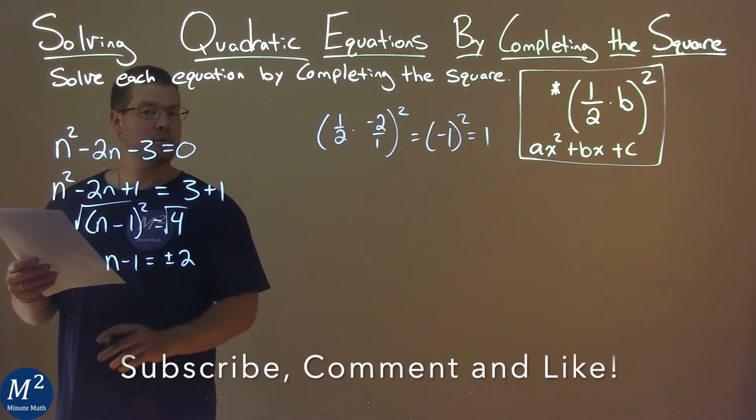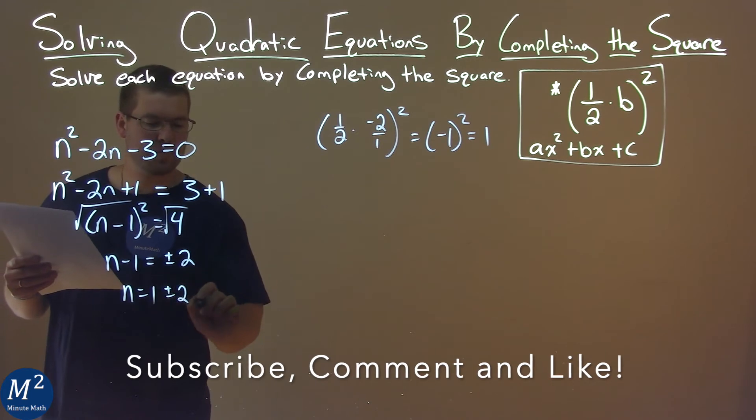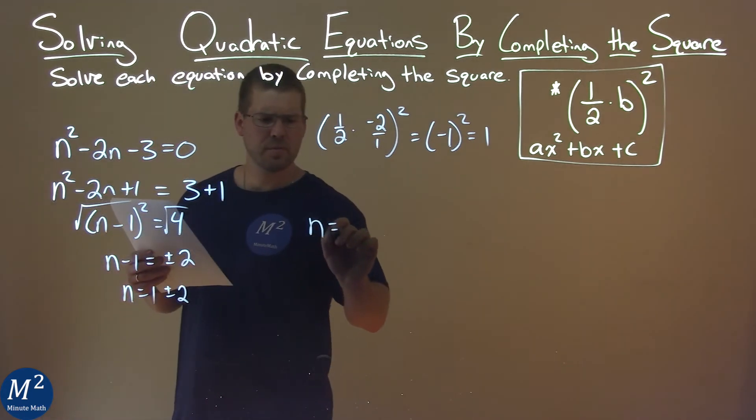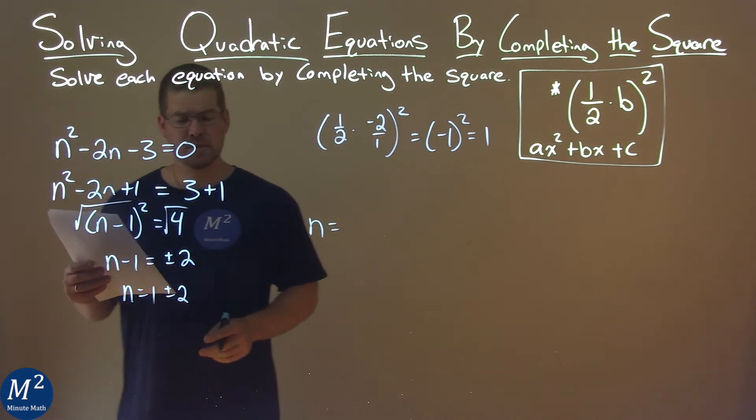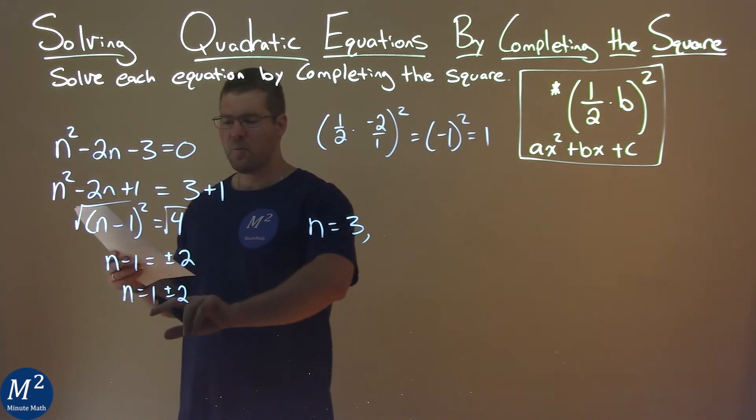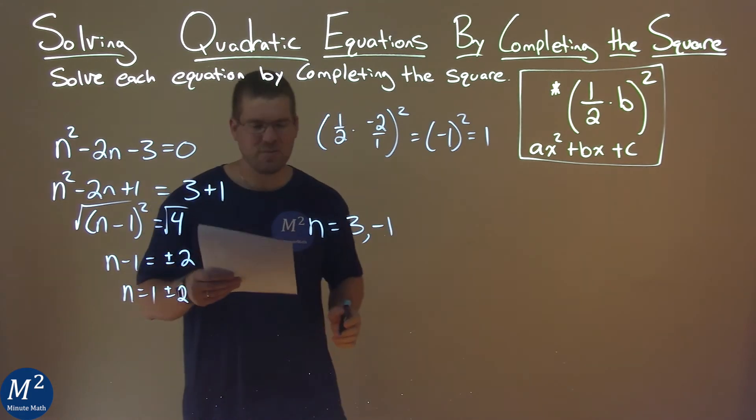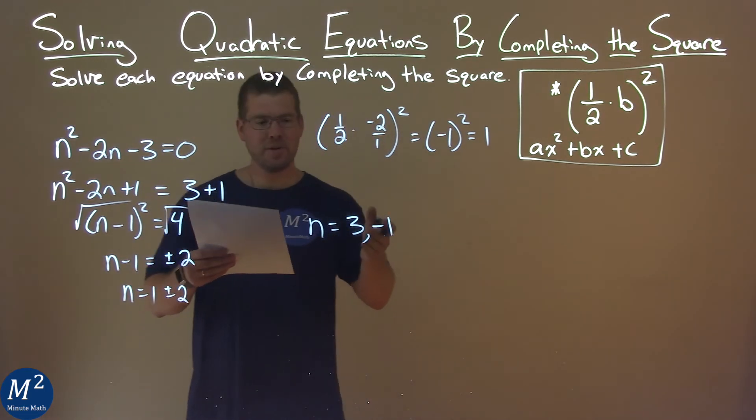We now add 1 to both sides, so n = 1 ± 2. What are our solutions? Let's solve each one individually. 1 + 2 = 3, and 1 - 2 = -1. So our two answers are n = 3 and n = -1.